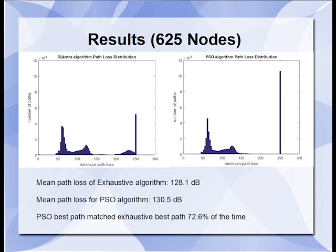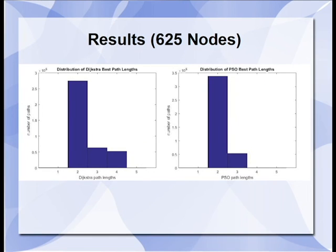For the 625 node dataset, the distributions are again very similar, and the mean magnitude of the paths is around 2 decibels different. In this instance, the PSO algorithm matches the best path found by the exhaustive algorithm 72.6% of the time, though a large part of this is probably due to a lot of the best paths being the direct path from start node to end node. Looking at the path lengths data, we again see that PSO often missed the longer, ideal paths.